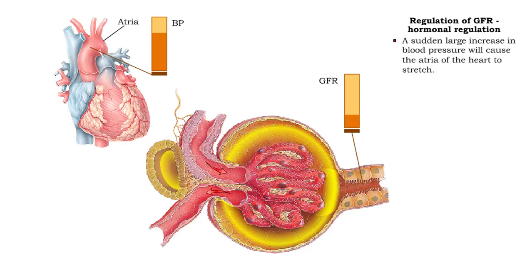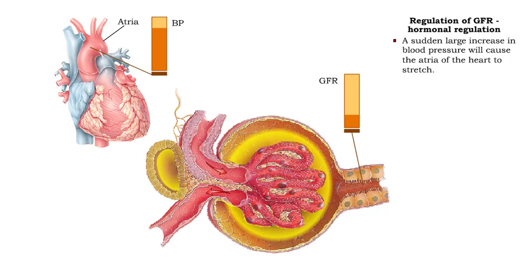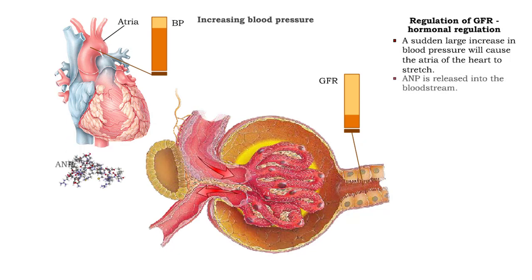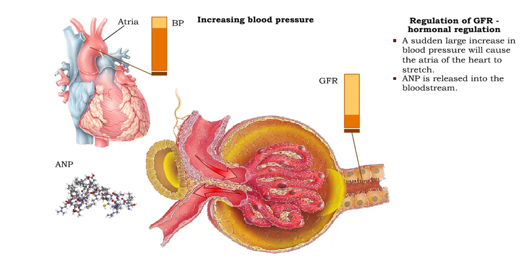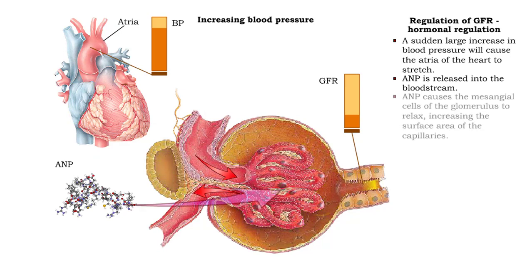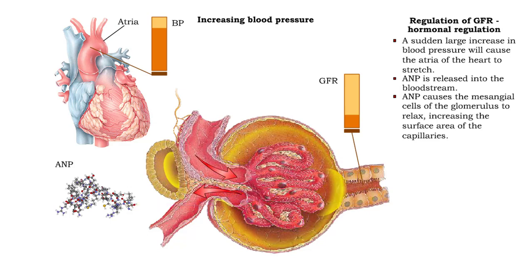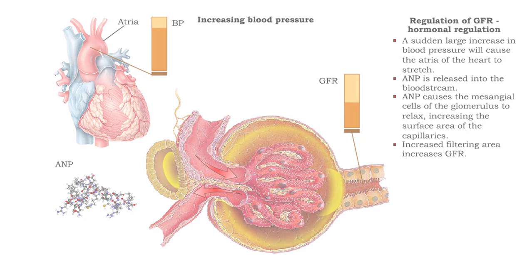If there is a sudden, large increase in blood pressure, the atria of the heart are stretched, and atrial natriuretic peptide is released into the bloodstream. Atrial natriuretic peptide causes the mesangial cells of the glomerulus to relax, increasing the surface area of the capillaries, resulting in an increased filtering area.